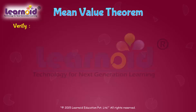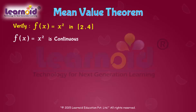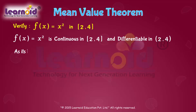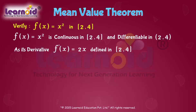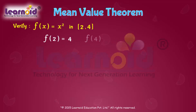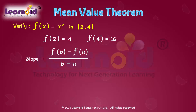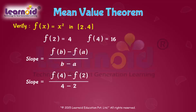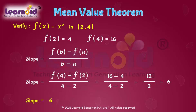Let us verify the Mean Value Theorem for the function f(x) = x² on the interval [2, 4]. f(x) = x² is continuous on [2, 4] and differentiable on the open interval (2, 4), as its derivative f'(x) = 2x is defined on [2, 4]. Now f(2) = 4 and f(4) = 16. Let us find the slope of the line joining the points 2 and 4 on the curve. It is equal to f(4) minus f(2) divided by 4 minus 2, which is equal to 6.